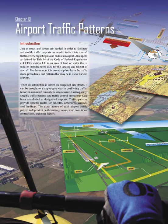When an automobile is driven on congested city streets, it can be brought to a stop to give way to conflicting traffic. However, an aircraft can only be slowed down. Consequently, specific traffic patterns and traffic control procedures have been established at designated airports.